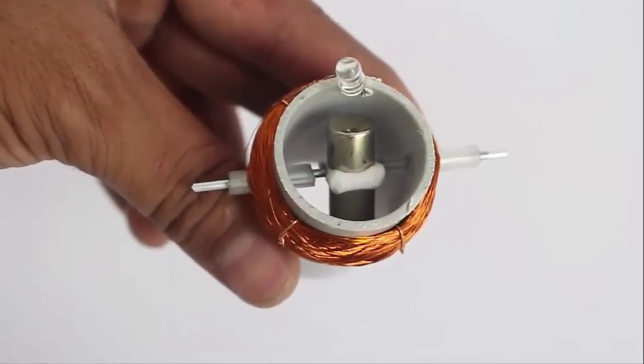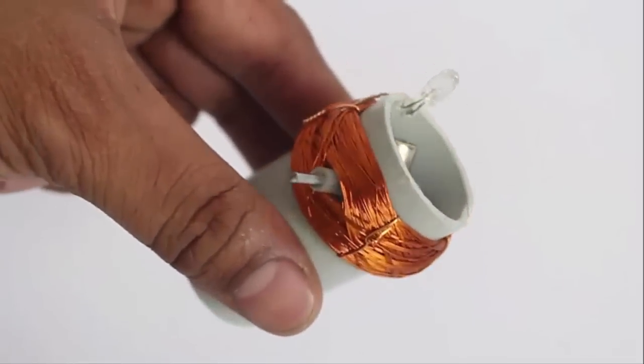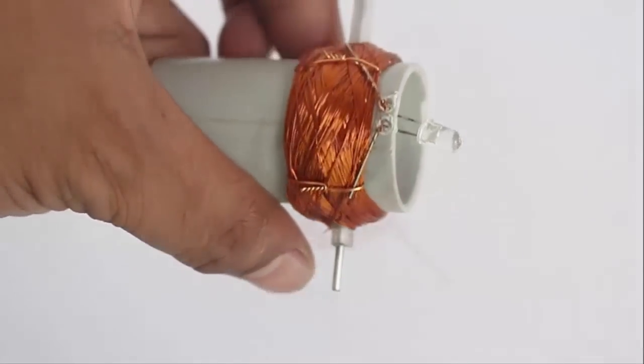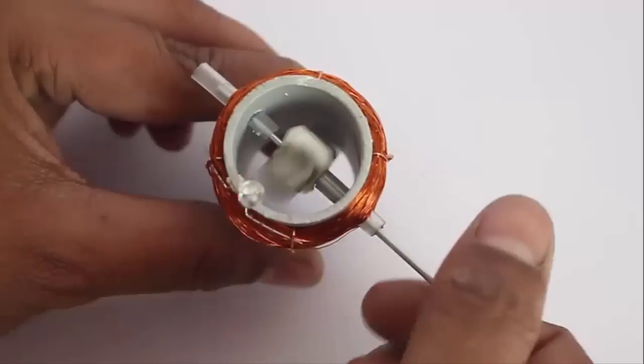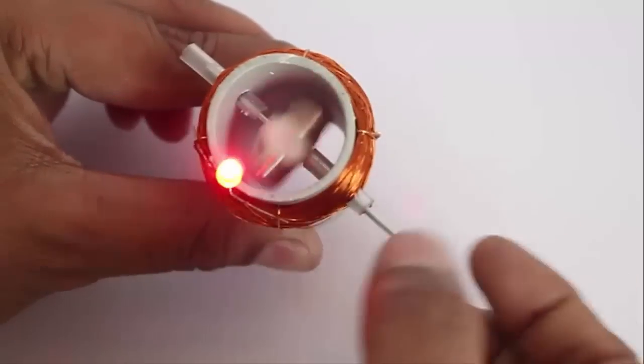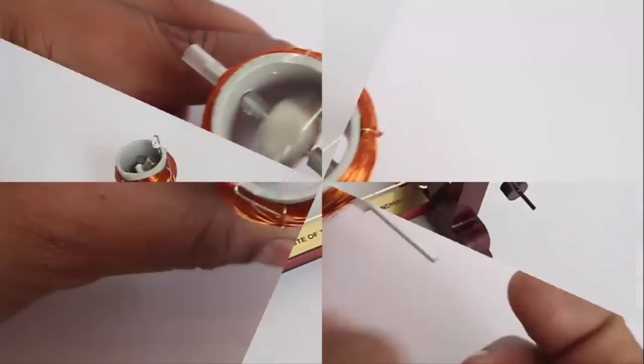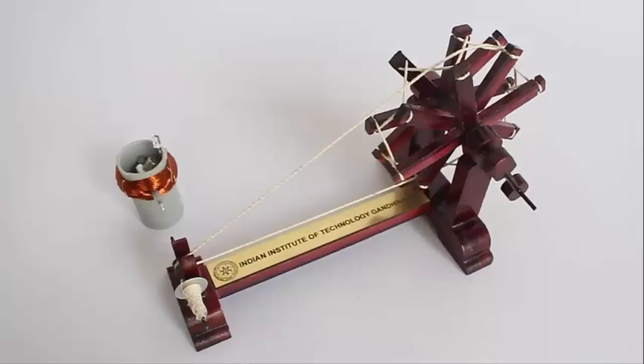And what you see right now is a mini generator. There is 1000 turns of insulated copper wire, 36 gauge, the ends of which are attached to a small LED and strong neodymium magnets spinning in the middle.